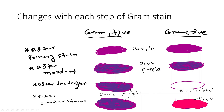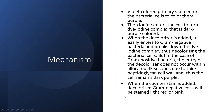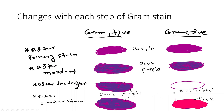Then we apply the counterstain — neutral red, safranin, or basic fuchsin. It will stain only the decolorized bacteria; that is, gram negatives will be stained, while gram positives are already colored purple. After counterstain, you can see the gram negative bacteria will be pink because they are stained by the counterstain, while gram positive bacteria remain dark purple. So after gram stain, gram positive bacteria are dark purple and gram negative bacteria are pink.